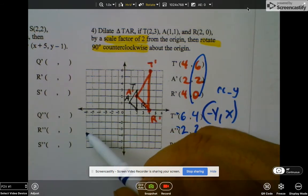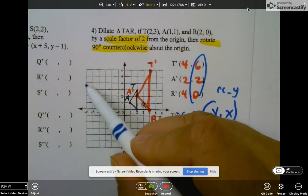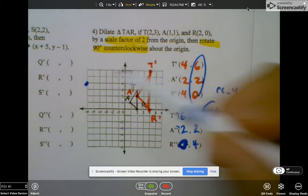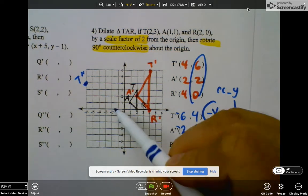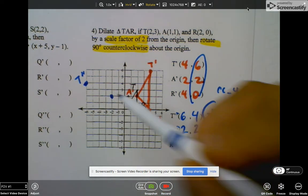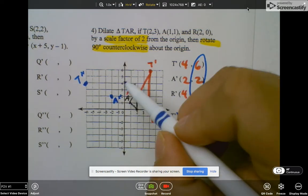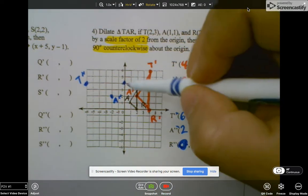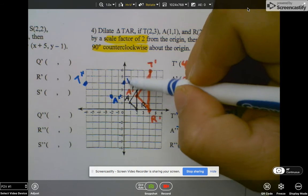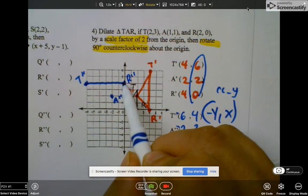So I'm going to go (-6,4) - one, two, three, four - that's going to be T double prime. And I'm going to go (-2,2) - that's going to be A double prime. And then (0,4) will be here, and that will be R double prime. And then I graph it like that.